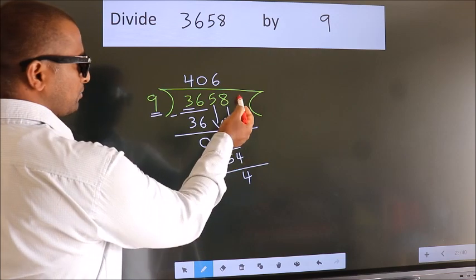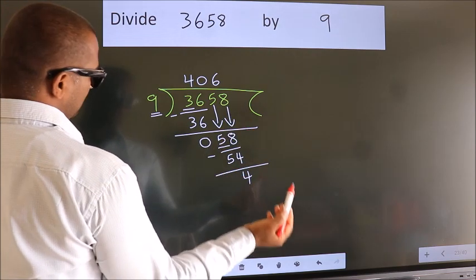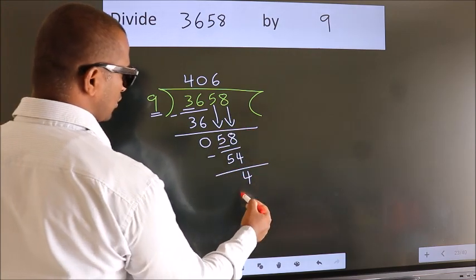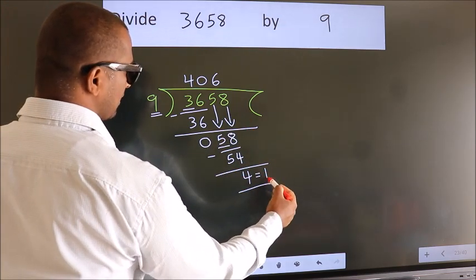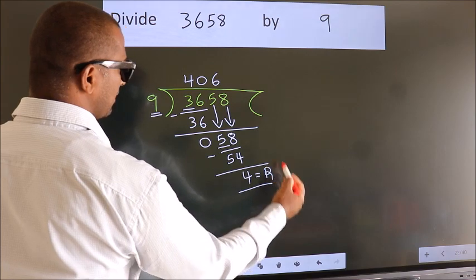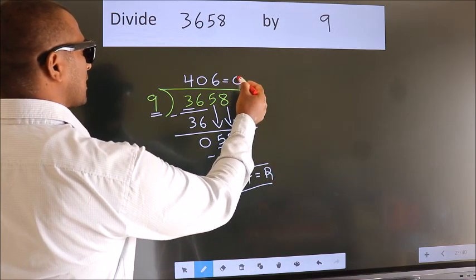No more numbers to bring down, so we stop here. This is our remainder. This is our quotient.